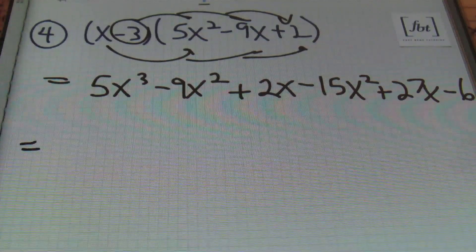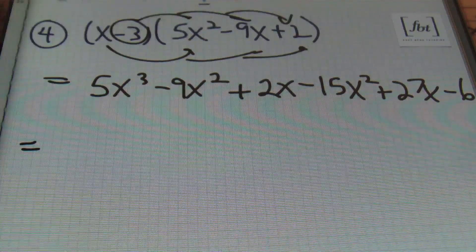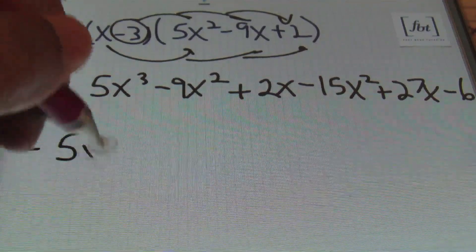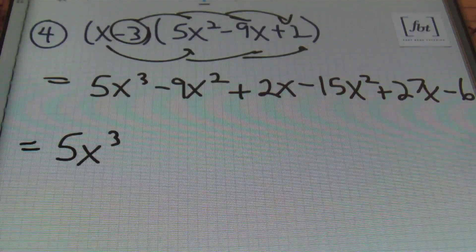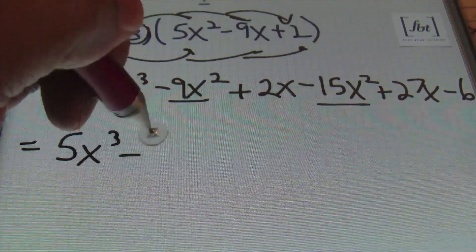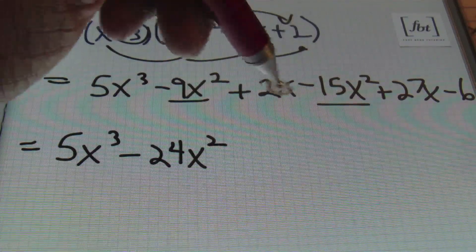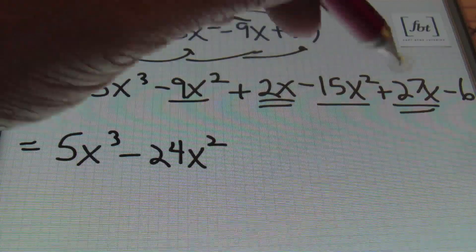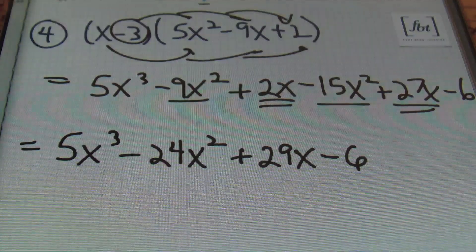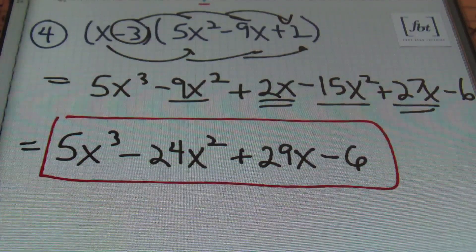Next I'll look to see if I can combine like terms, writing my answer in descending order of variable x — starting with the highest exponent. I start with 5x cubed. Then I combine negative 9x squared and negative 15x squared to get negative 24x squared. Then the x to the first power terms: 2x and positive 27x give me positive 29x. And I bring down that negative 6. That's my final result — done and done. That's problem number 4.